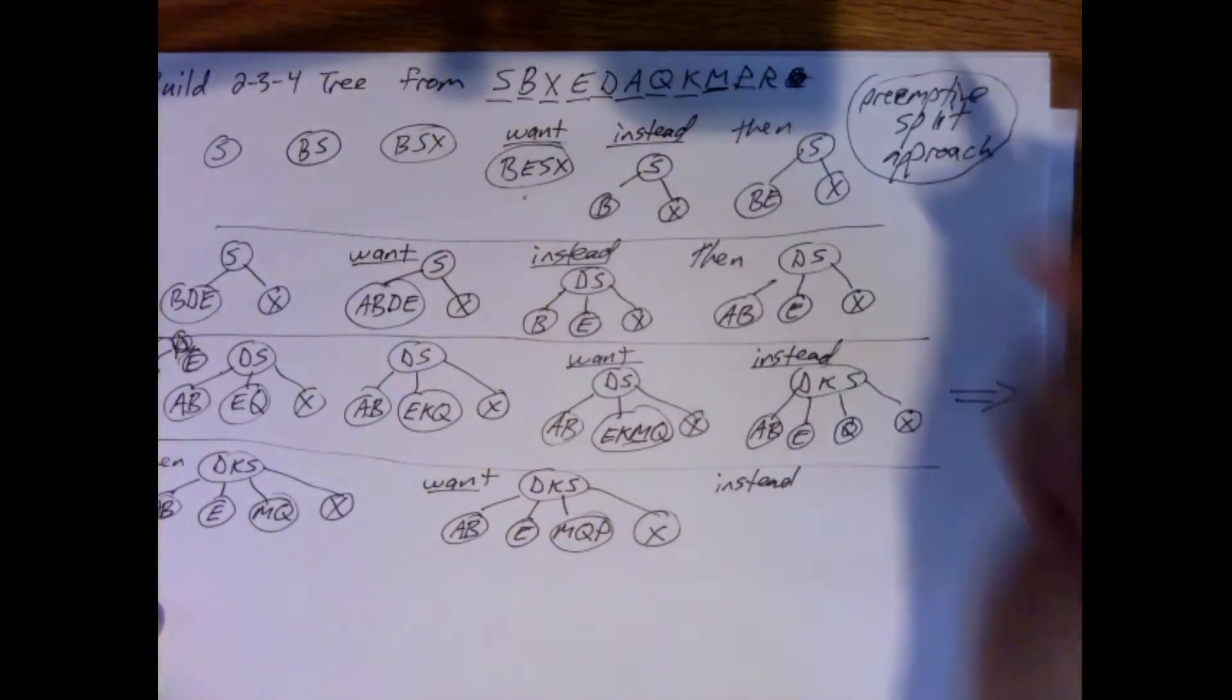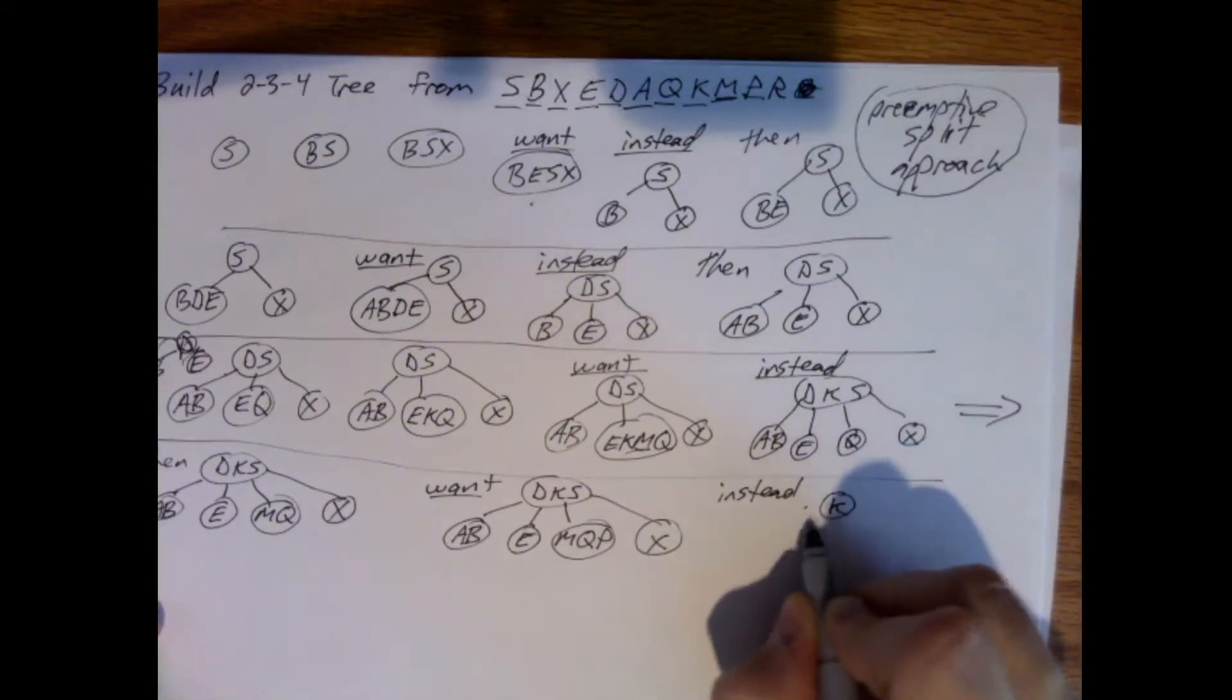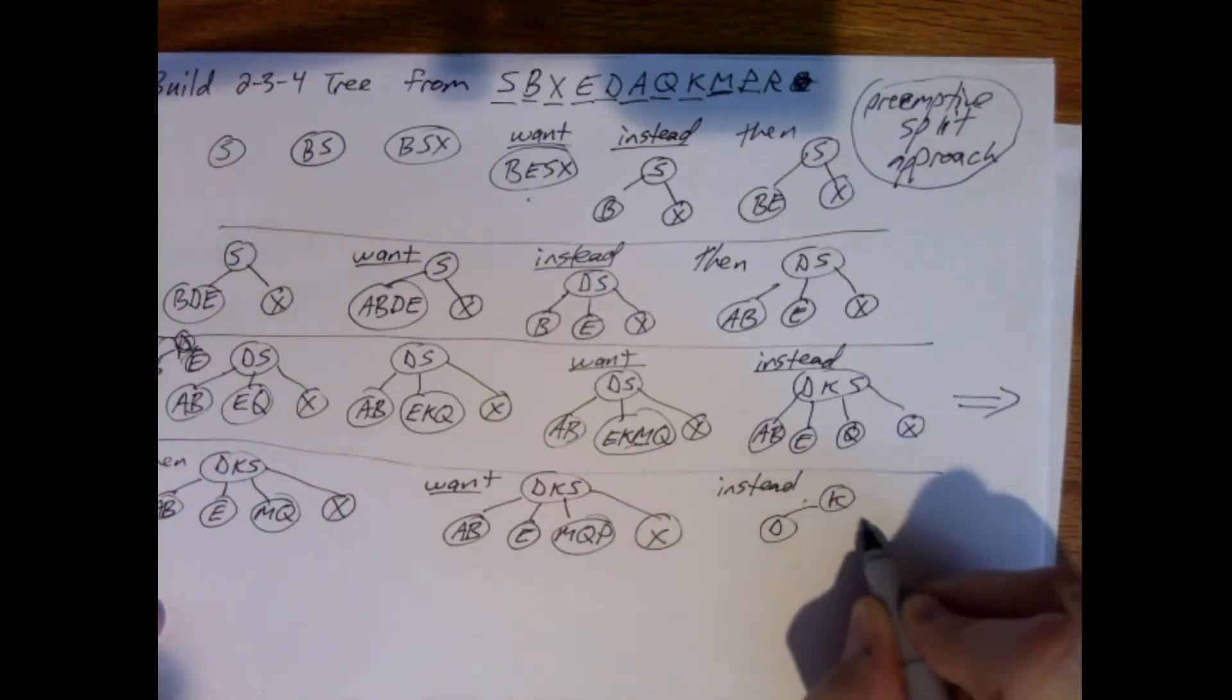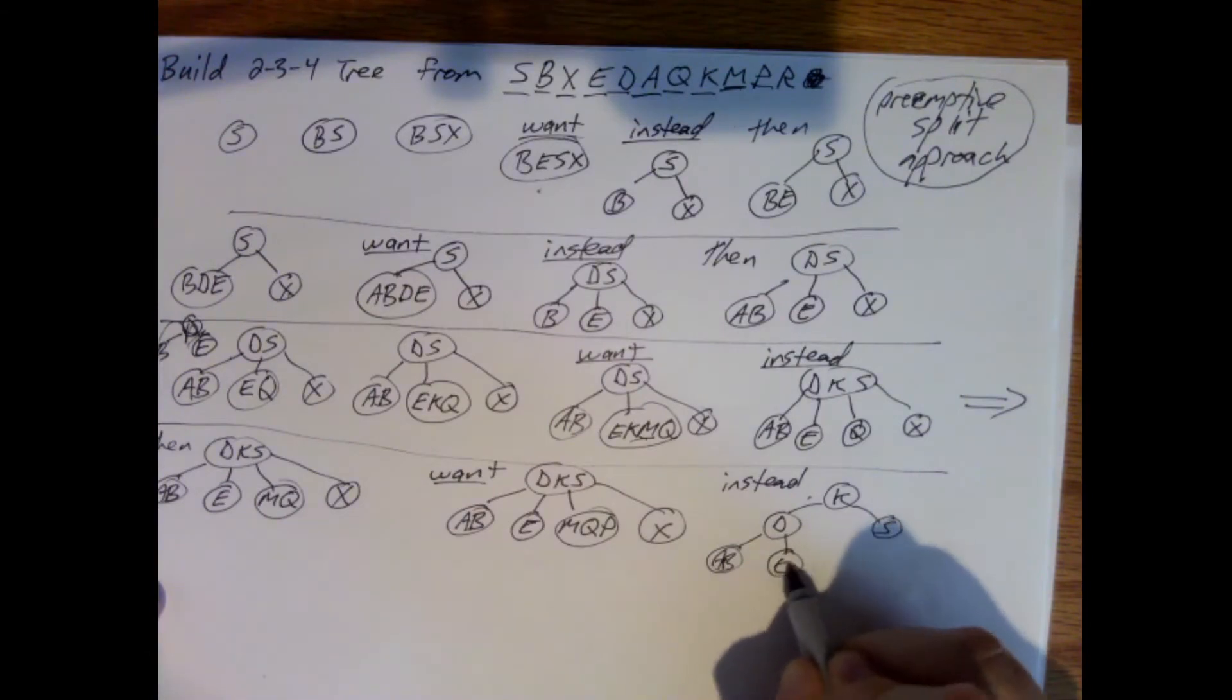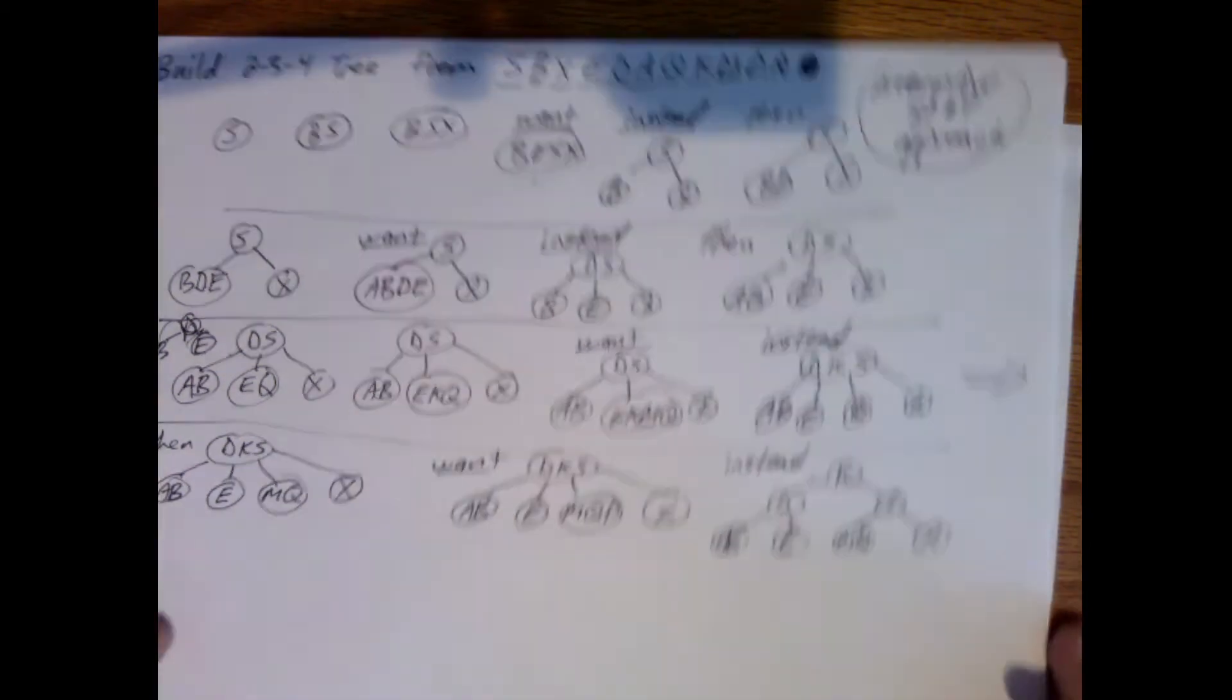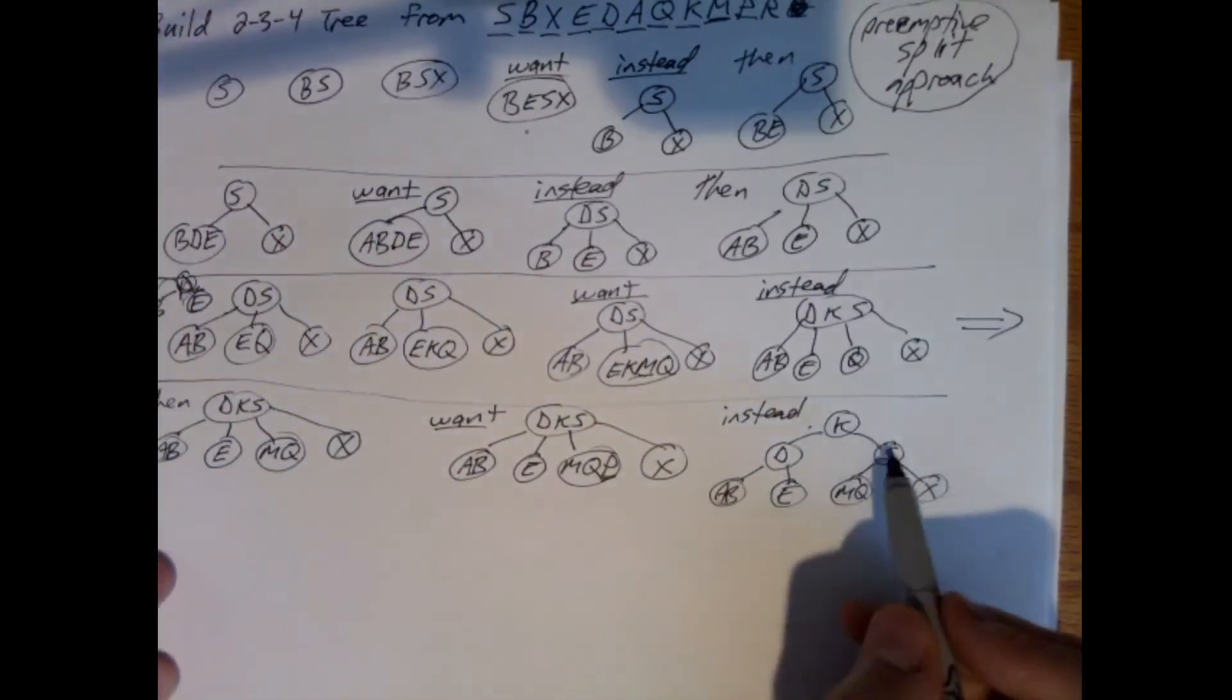So we're doing P. I'm going to take this and split. So K is in the middle. It goes to D and S. And now here's A, B, here's E, M, Q, and here's X. We haven't added the P yet. That's what we're trying to add.